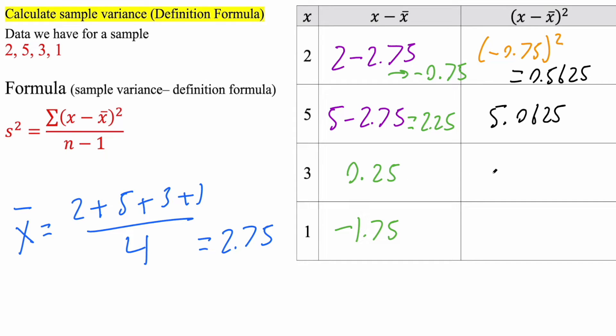We take this number, we square it, we get 0.0625. We take this number, we square it, and we get 3.0625.